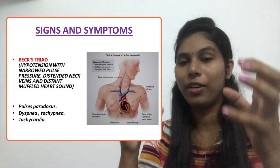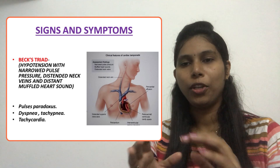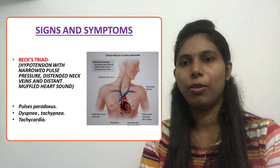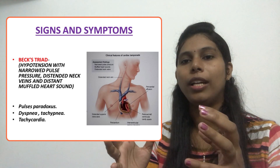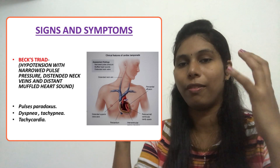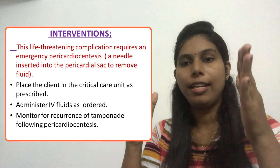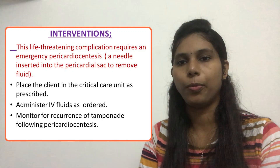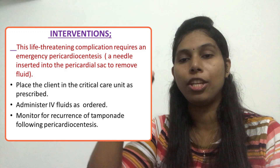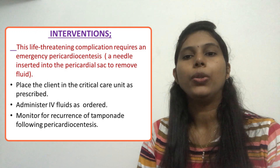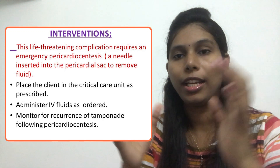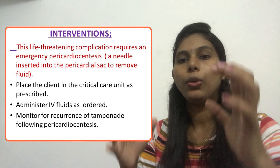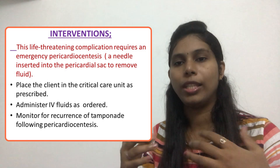I hope the signs and symptoms and the meaning of cardiac tamponade are clear to you. I don't want to give a very elaborate explanation, because most of you already have an idea. Before going to a question, a brief explanation helps us brush up our knowledge. Now, what are the main interventions? Once you understand the client is diagnosed with cardiac tamponade, the immediate intervention is to prepare the client for pericardiocentesis, as it is a life-threatening condition.